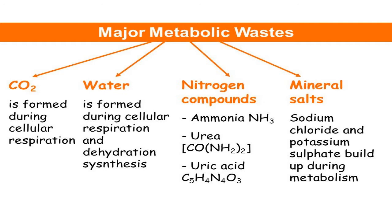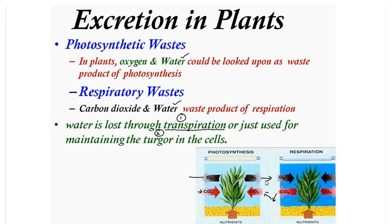This includes nitrogen compounds, water, carbon dioxide, phosphates, sulfates, etc. Animals treat these compounds as excretes. Plants also have their own chemical machinery to transform these compounds into useful substances or remove them from the organism.